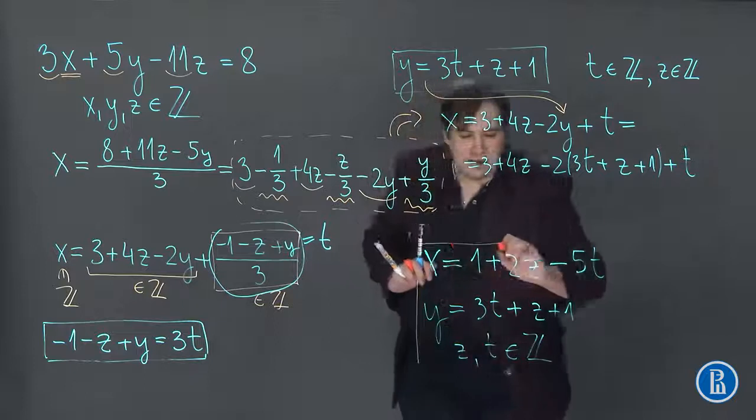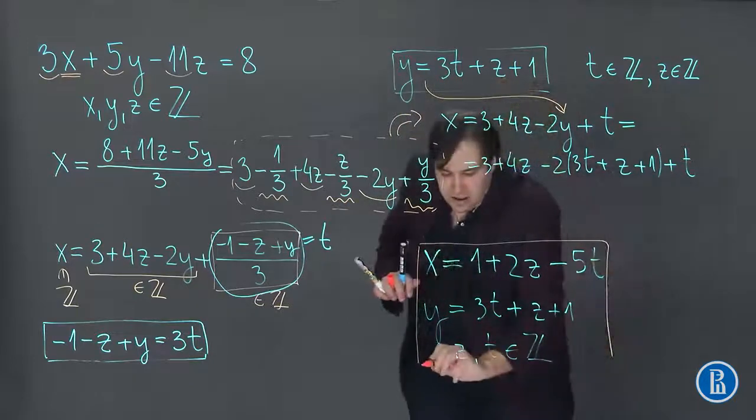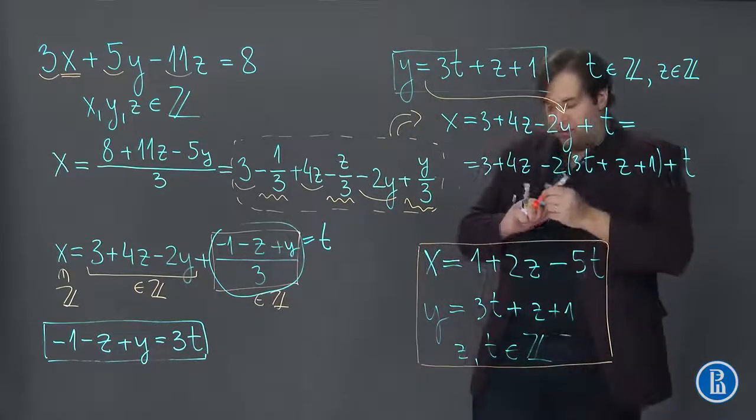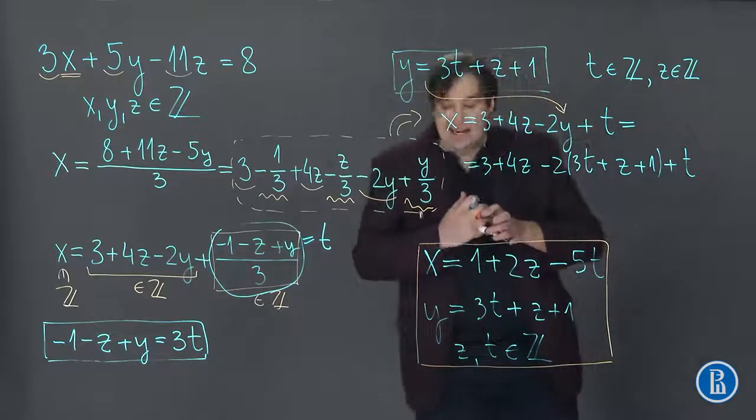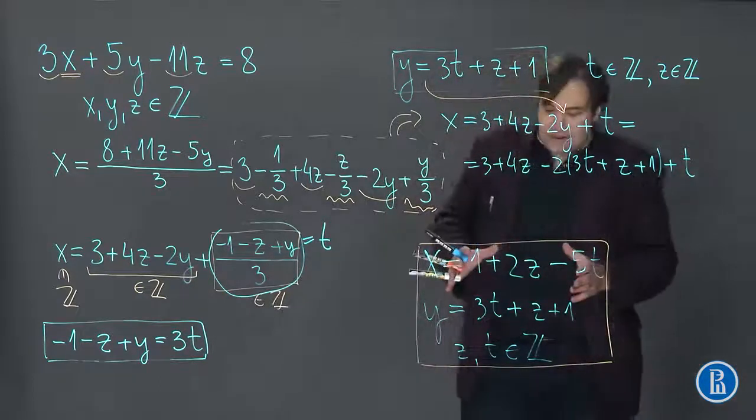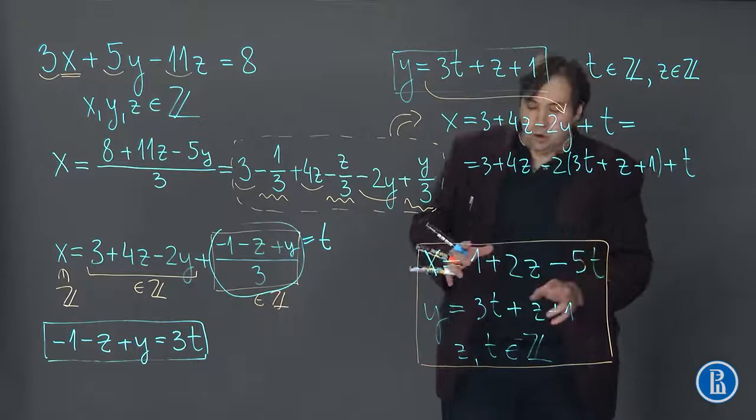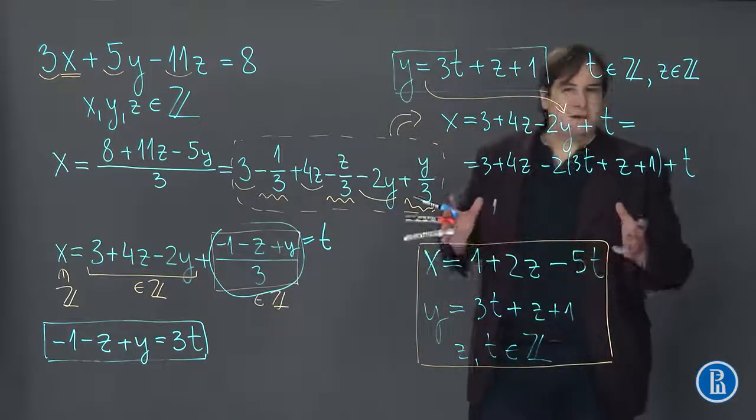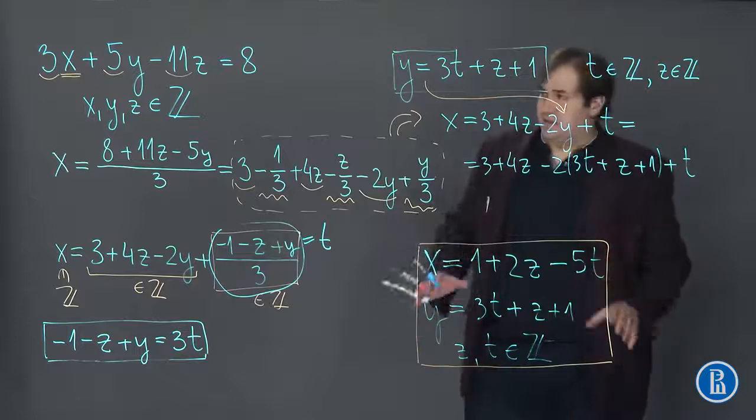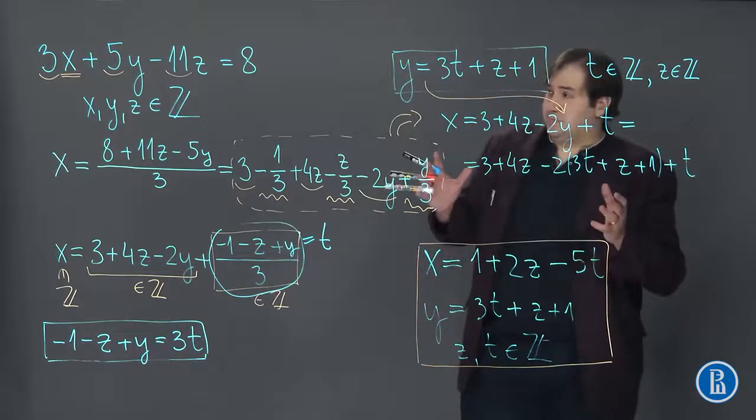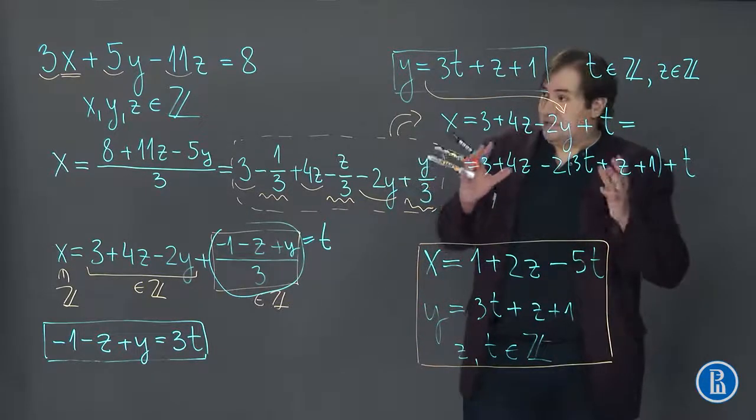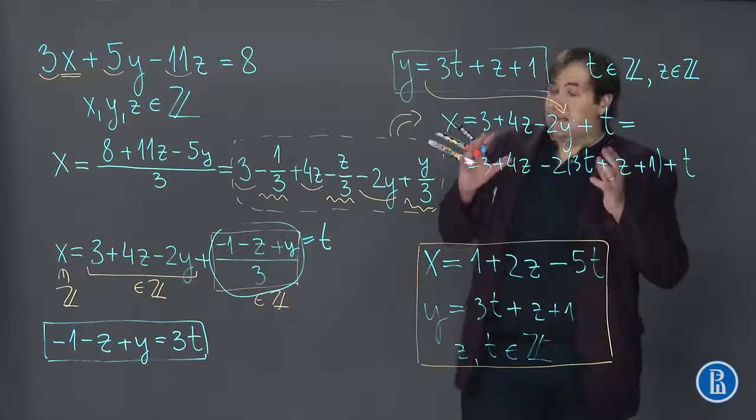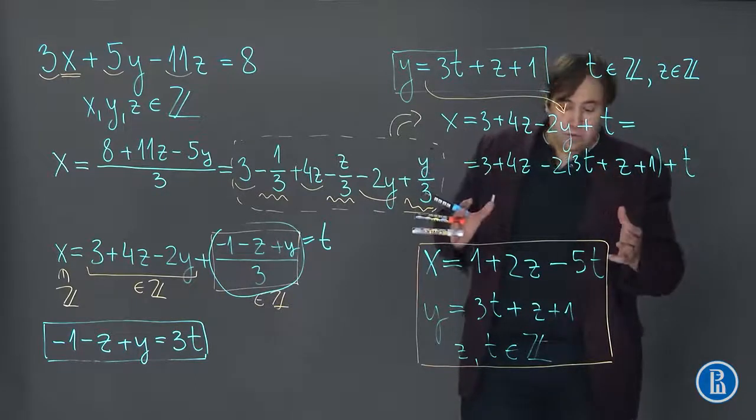So we see that one linear Diophantine equation with three variables has an answer, a solution, that depends on two independent variables. Well, that's quite logical because it is the space of solutions of a linear equation. It has dimension 2.